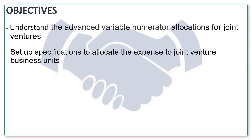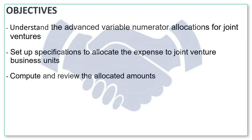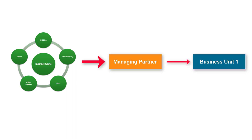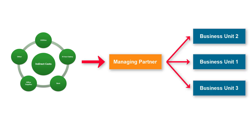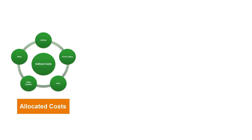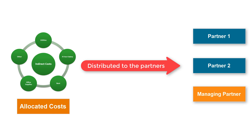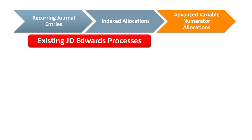The indirect cost incurred by the managing partner can be allocated to one or more business units that benefited from the cost. The indirect costs will only be included in the distribution process after they are allocated to the business units. The allocated amounts are then distributed to the partners including the managing partner. Advanced variable numerator allocations is a feature in the JD Edwards financial system that enables you to perform various types of allocations.